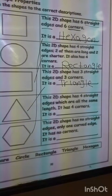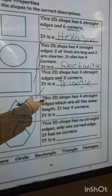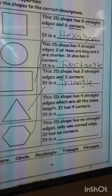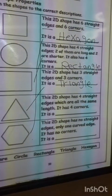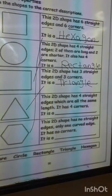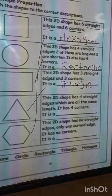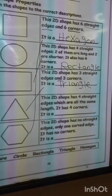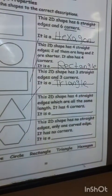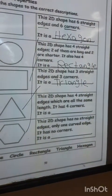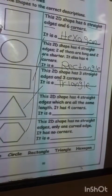Number four. This 2D shape has four straight edges which are all the same length, and four corners. What's the shape? That's right, square.